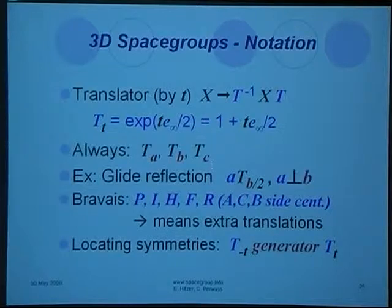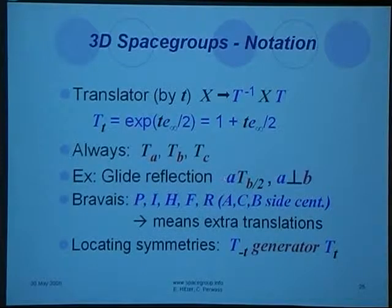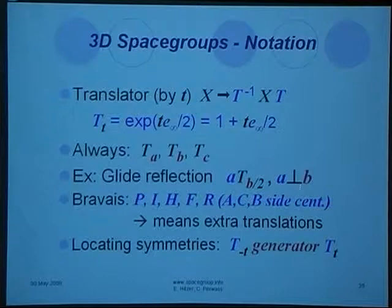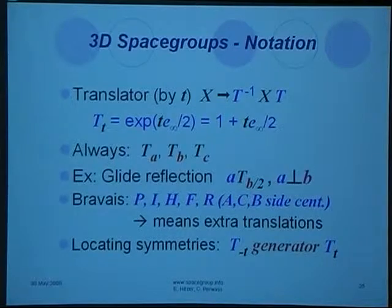This, for example, is a glide reflection, reflecting at a plane A. If the vector B is perpendicular to A, it's in the A plane, and then we do a translation in the A plane that expresses a glide reflection.